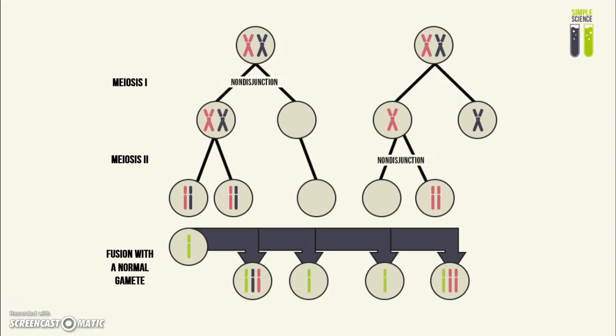The most common mechanism is non-disjunction in meiosis I and meiosis II. In this first example, non-disjunction is happening in meiosis I.